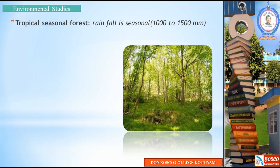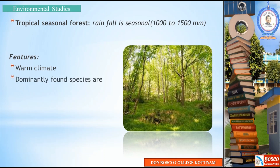The second type is Tropical Seasonal Forest, where rainfall is seasonal. Its features include a warm climate. Dominantly found species are elephant, zebra, giraffe, and kangaroo. There are dry and wet seasons alternately, with grass and scattered trees.